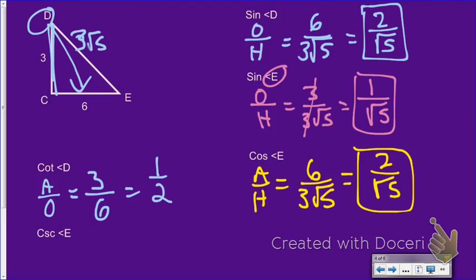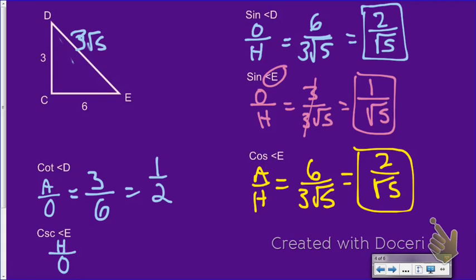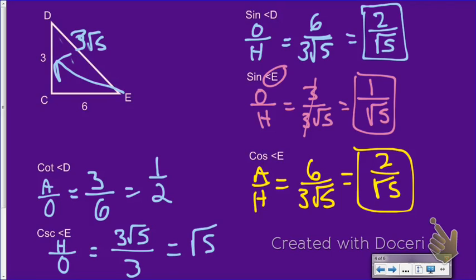The last one is the cosecant of angle E. Cosecant is the reciprocal of sine — 1 over sine — so it's hypotenuse over opposite. My hypotenuse is 3√5 and my opposite across from angle E is 3, so cosecant of E = 3√5/3, which simplifies to √5. There's actually a faster way: since cosecant is the sine ratio flipped, I could have just taken the sine of E, which I already found, and flipped it — and that's exactly what I got.